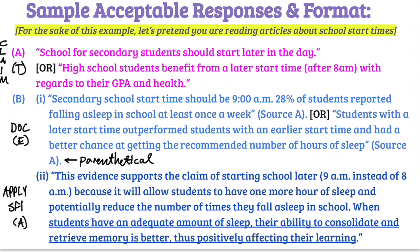Here are some sample acceptable responses from the CED. First, we've got to start with the claim — our T, our topic sentence. The most minimum answer the scoring guidelines would accept was: 'school for secondary students should start later in the day.' That's the bare minimum. A more specific and better example: 'high school students benefit from a later start time, such as after 8 a.m., with regards to their GPA and health.' This claim sets you up nicely for Part B and Part C.